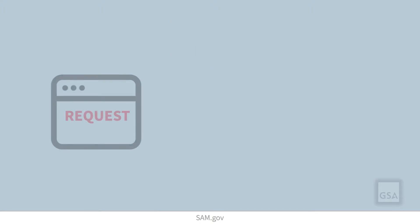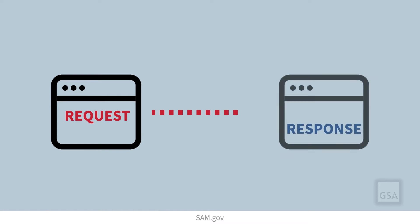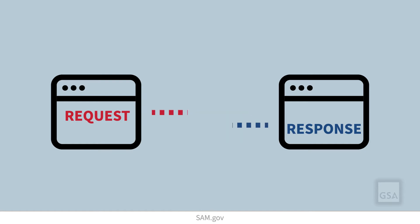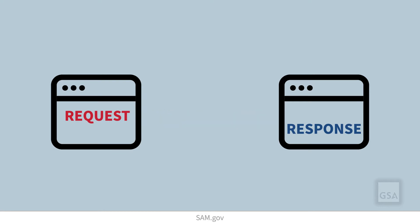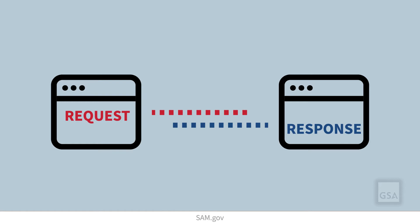An Application Programming Interface, or API, is a method that helps one software application talk to a second application. The API is the messenger that delivers the request to the target software and then returns the response to the requesting software. In SAM.gov, APIs provide this type of linkage to public users, account holders, and users with system accounts.